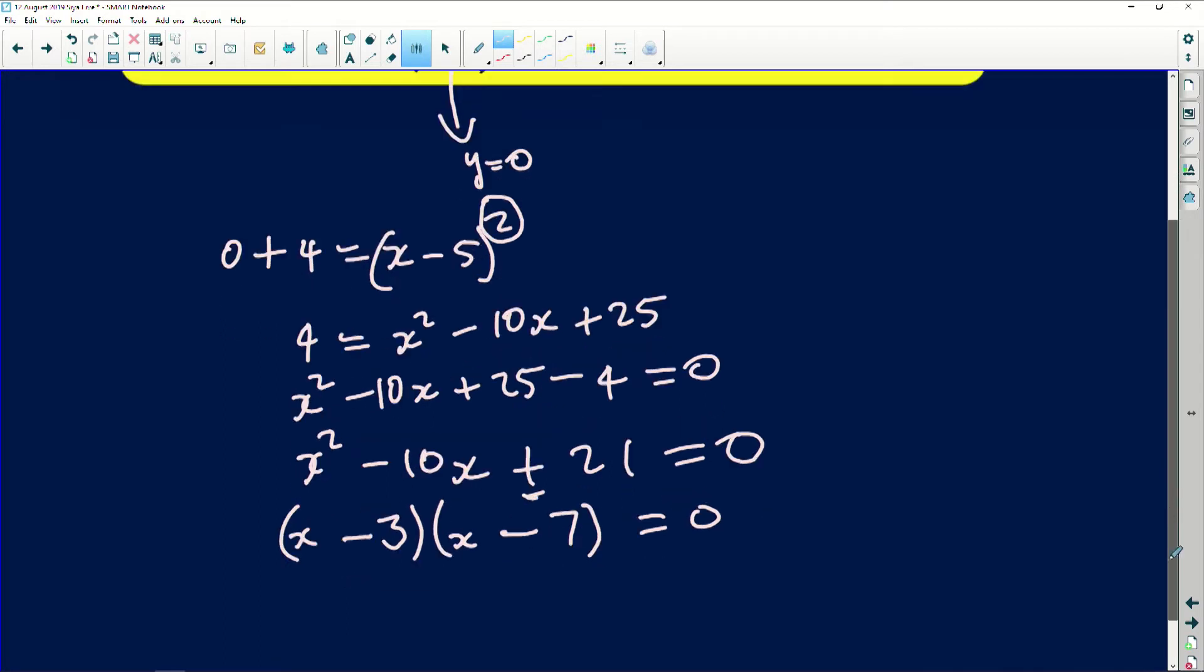And then from here, I'll have x squared minus 10x plus 21 is equal to 0. Then I need to then factorize this. To factorize this, if this is a plus, it means that my brackets will have two of the same signs. So it will be x minus x minus. Then 21 to give me 10 will then be 7 and 3. And then lastly, I'll have x is equal to 3 or x is equal to 7. Then my x-intercepts are 3 and 0 or 7 and 0.